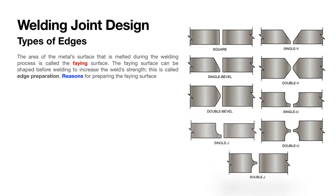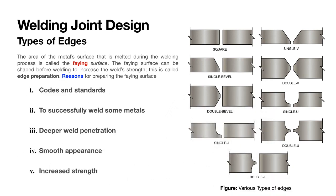When we are welding two materials, the surfaces which are to be joined or welded are called faying surfaces, and there can be some preparations carried out on the surface. We can prepare the edges which we are going to weld, and the reasons for preparing those edges is that sometimes we want to increase the strength of the weld, sometimes we want deeper penetration, smoother appearance, etc. Based on the type and shape of the surface preparation, there are various types: square, V joint, double V joint, bevel, double bevel, J, single J, double U, double J, etc.